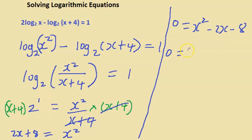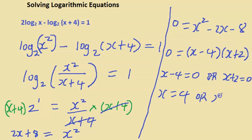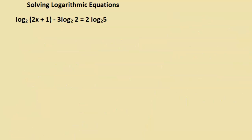Factorizing by breaking minus 2x into minus 4 and positive 2 — factor by grouping — we get (x minus 4)(x plus 2). Equating both brackets to zero: x minus 4 equals 0 gives x equals 4, and x plus 2 equals 0 gives x equals minus 2.